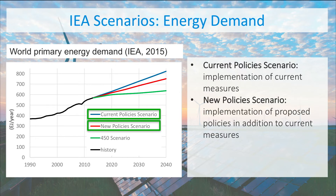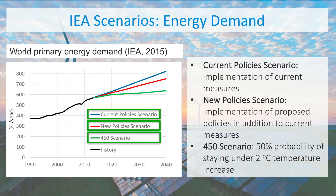it is assumed that no new policy measures are implemented, and as you see, energy use increases strongly. In the new policy scenario, also policies that are in the pipeline are assumed to be implemented. This is the central scenario in the World Energy Outlook. Current and proposed policies are far from sufficient to stay below 2 degrees C in climate change related temperature increase. Therefore, a third scenario is added: the 450 scenario, which is in line with 2 degrees C, where the growth of energy demand is strongly moderated.